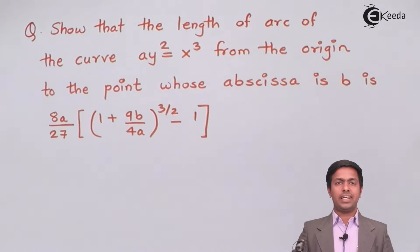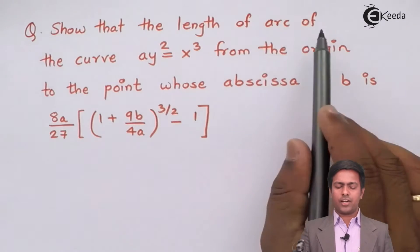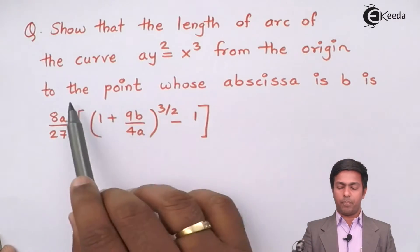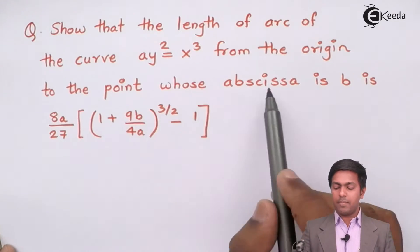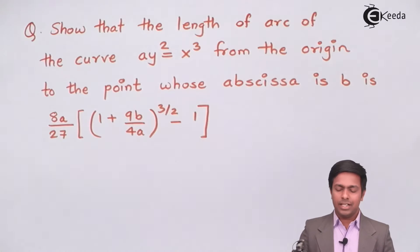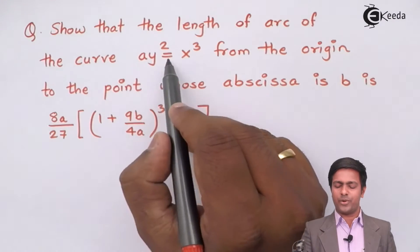So here we have to show that length of the arc of the curve a y square equal to x cube from the origin to the point whose abscissa is b is this. Now to understand the problem, first of all focus on the given curve. So here the given curve is a y square equal to x cube.